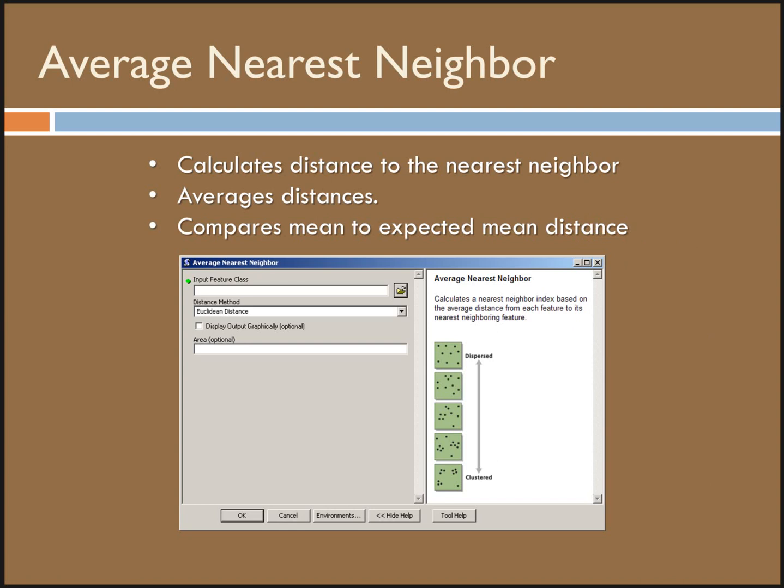It also outputs a z-score and a p-value. Remember that the p-value is a probability. It's the probability that the observed spatial pattern was created by some random process. In other words, when a p-value is really small, there's a very low probability that the pattern is random. The z-score represents standard deviations. It's the difference between a value and the mean of all the values assuming a normal distribution. A z-score of zero means that a value is the same as the mean. In our case, it compares the mean of our distances to the mean of the distances for a random distribution. We're looking for high z-values. We want to be outside of that bell curve.